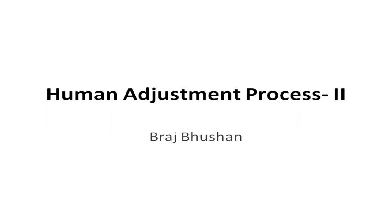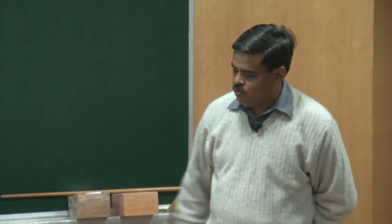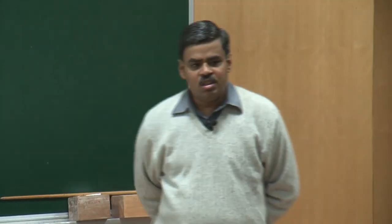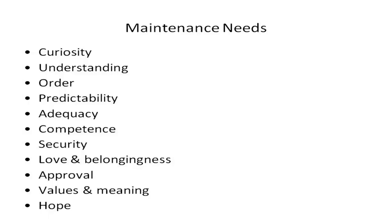Today we would continue with the human adjustment processes, where we were talking about the maintenance needs. Last time we had discussed four maintenance needs: curiosity, understanding, order and predictability. Today we would continue with the remaining maintenance needs.